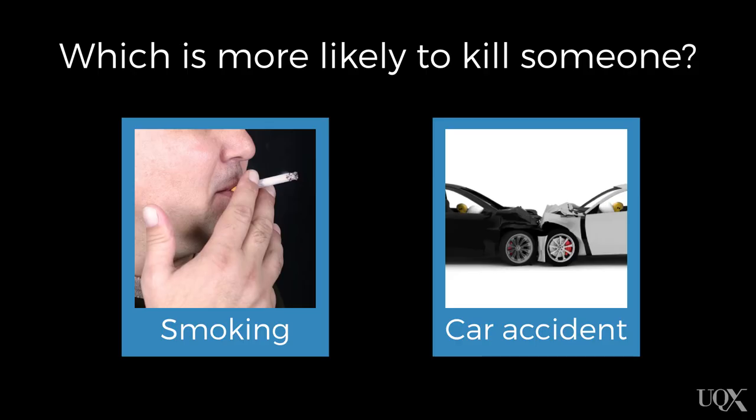To help you answer this question, try to think of some examples of words with R in the first position and some examples of words with R in the third position. The second question is: which is more likely to kill someone — a smoking-related illness or a car-related accident? When answering this question, don't think about whether you smoke or drive, but rather what is the risk posed by each of these to the population as a whole?